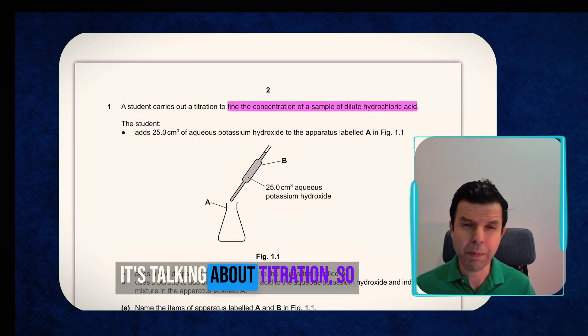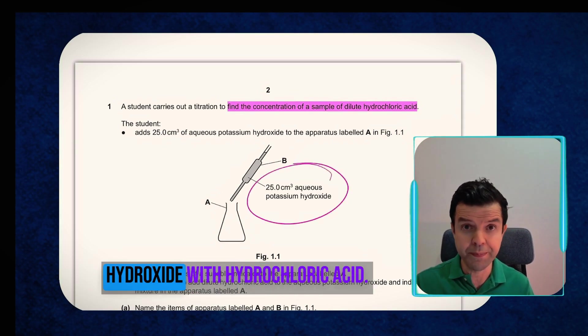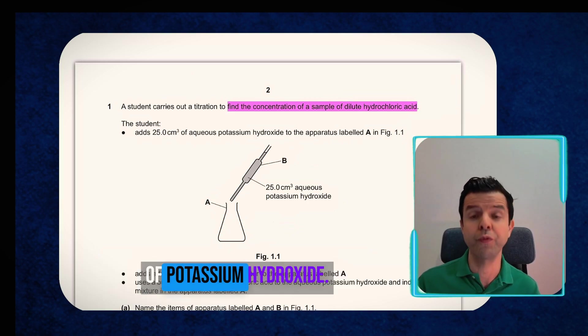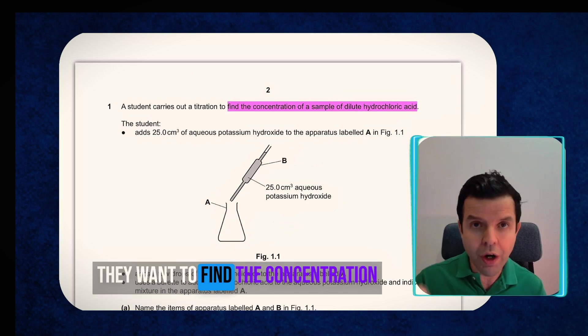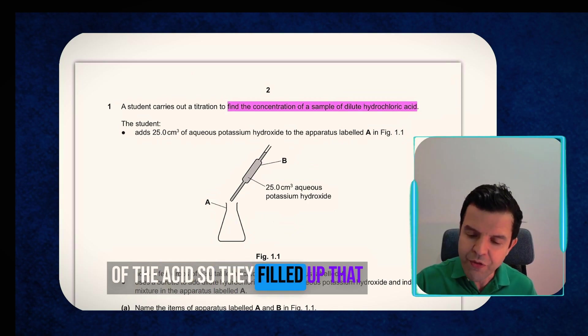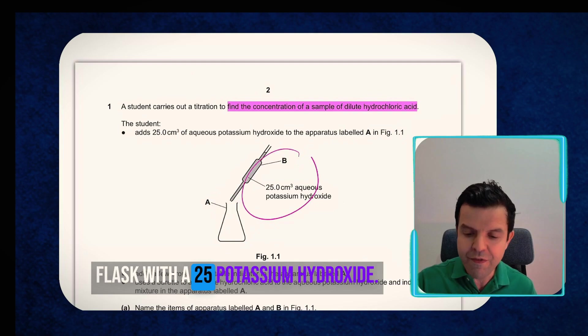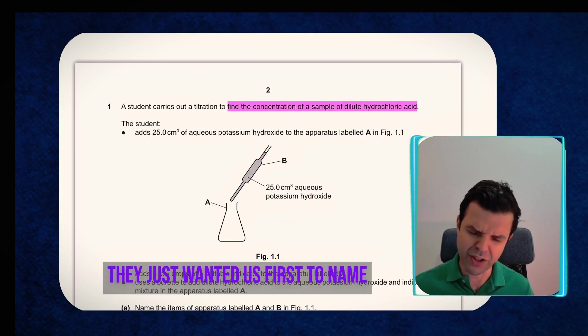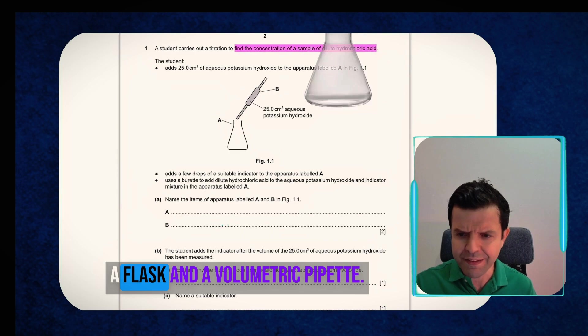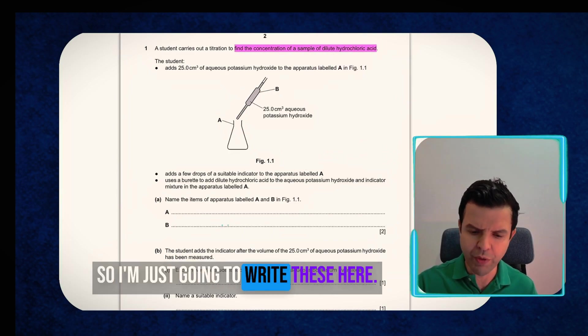It's talking about titration. So basically they're mixing potassium hydroxide with hydrochloric acid. They already know the concentration of potassium hydroxide. They want to find the concentration of the acid. So they filled up that flask with 25 cm³ potassium hydroxide. They just wanted us first to name a flask and a volumetric pipette. So I'm just going to write these here. First it's a conical flask and second is a volumetric pipette.